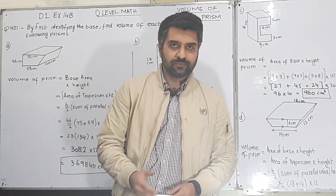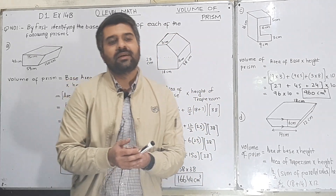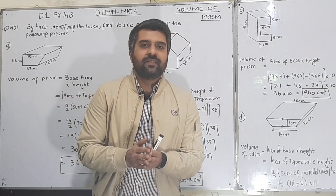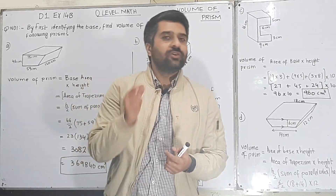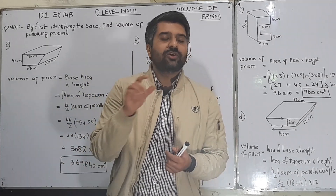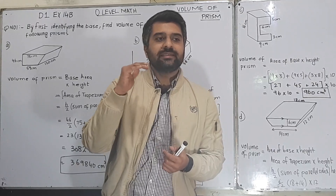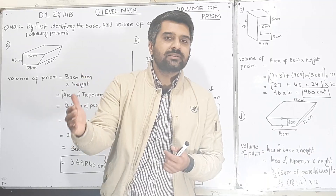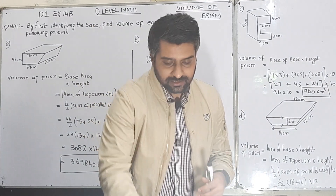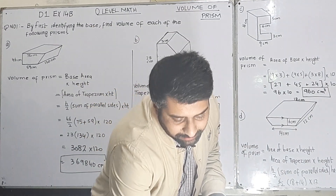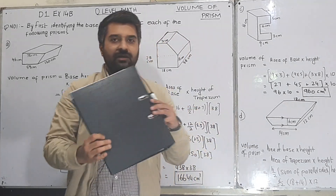First of all, what is a prism? A prism is a shape that has a uniform polygonal cross section. Its top base and bottom end are the same — for example, consider this file here, where suppose the base is a triangle.